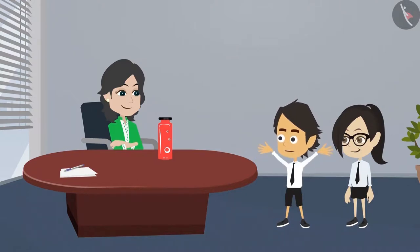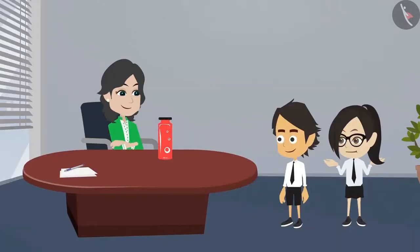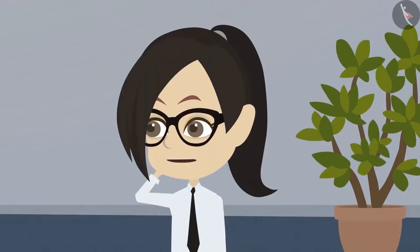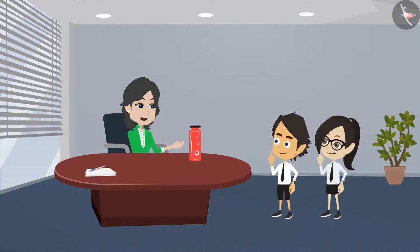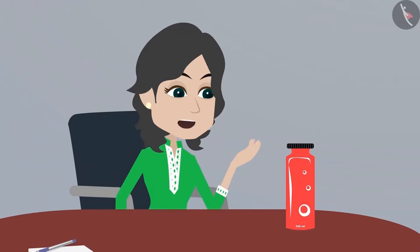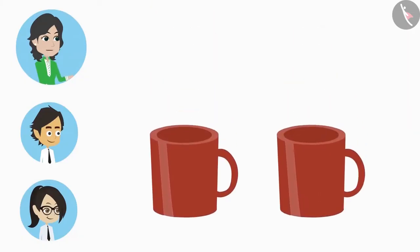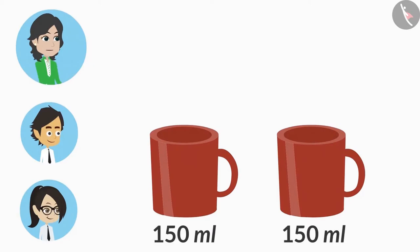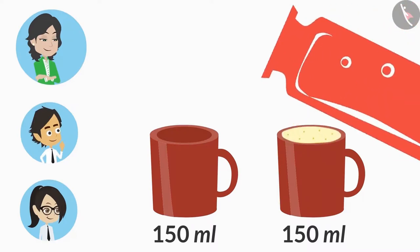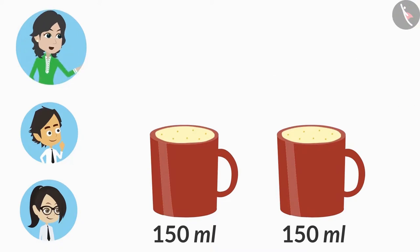Am I correct madam? You are absolutely correct, Ayushman. But how will we measure 150 ml? There are different measuring cups to measure liquid, but we do not have those cups with us right now. Then how will we measure the buttermilk? Look, I have two cups here. A normal size cup is approximately 150 ml. You can pour the buttermilk in both these cups. Both the cups are completely filled, which means the buttermilk has been divided into two equal parts.